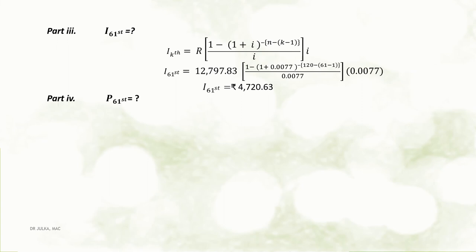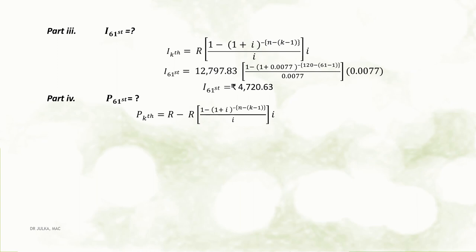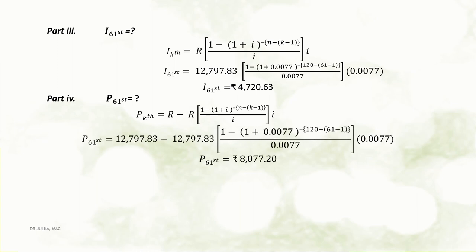Part 4: We want to calculate principal contained in the 61st payment. Principal contained in the kth payment is calculated using the formula: amount of installment minus interest in the kth payment. After putting the value of R = 12,797.83 and interest of the 61st payment, we get the principal contained in the 61st payment as Rs 8,077.20.